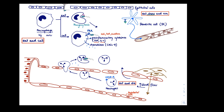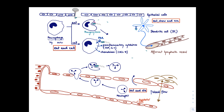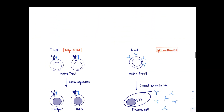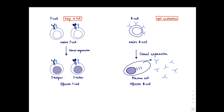Cytokines are little hormone-like molecules — they are the words of the immune system, how immune cells talk to each other. The macrophage will also start producing chemokines. Chemokines are like traffic directors of the immune system, attracting cells and making sure they can exit where they're supposed to go. An important chemokine that the macrophage produces at the beginning of an infection is CXCL8, which is secreted by the macrophage. Neutrophils have CXCL8 receptors on their surface.